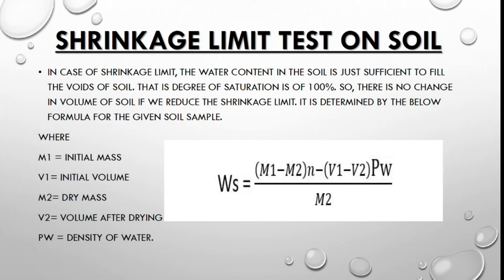Now moving toward the shrinkage limit test on soil. In the case of shrinkage limit, the water content in the soil is just sufficient to fill the voids of soil, that is the degree of saturation is 100%. So there is no change in volume of soil if we reduce the water content below the shrinkage limit. It is determined by the formula for the given soil sample, where M1 is initial mass, V1 is initial volume, M2 is dry mass, V2 is volume after drying, and Pw is density of water.